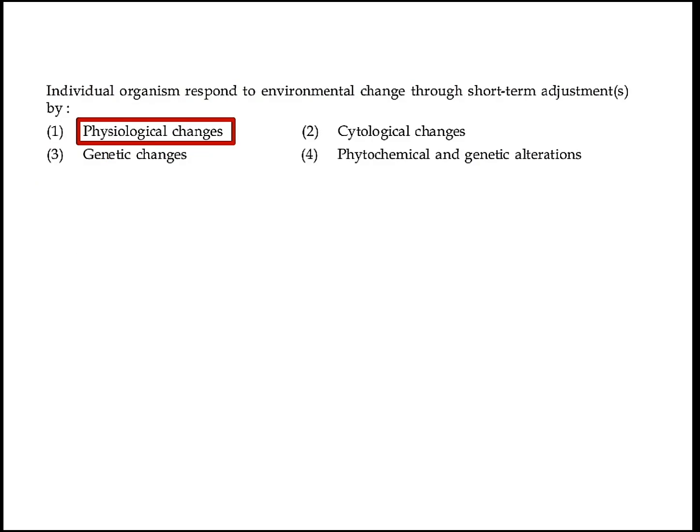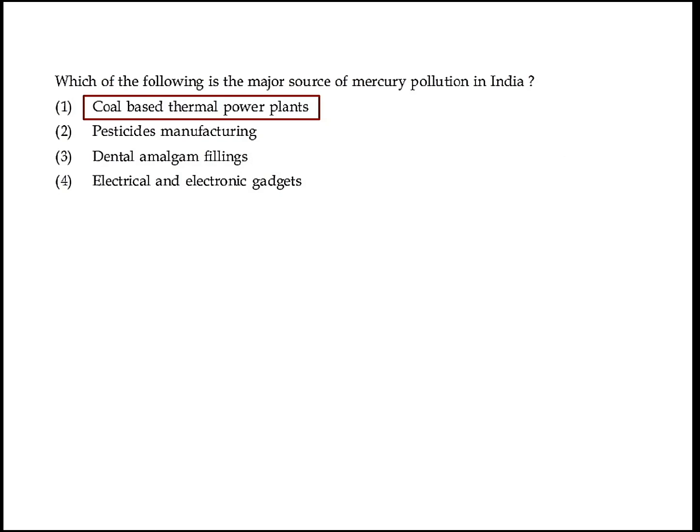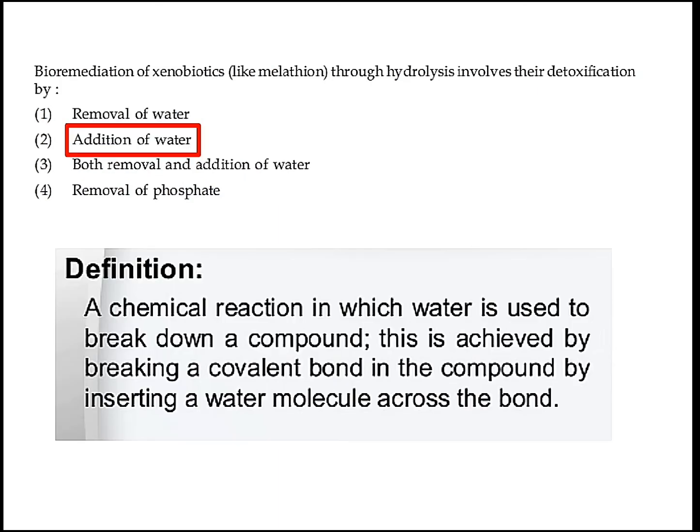Individual organisms respond to environmental change through short-term adjustment by physiological change. Option 1 is the right answer. Which of the following is the major source of mercury pollution in India? Coal-based thermal power plants. Option 1 is the right answer.